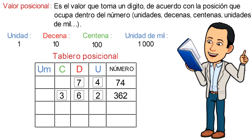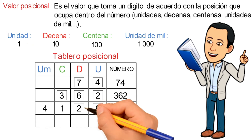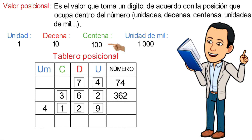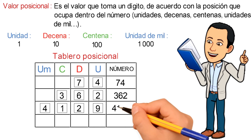Tercer ejemplo: tenemos el dígito 9, el dígito 2, el dígito 1 y el dígito 4. El valor 9 se encuentra en la columna de las unidades y como ésta vale 1 conservaremos este valor. El dígito 2 se encuentra en la columna de las decenas y como ésta vale 10 este valor se transformaría en 20. El dígito 1 se encuentra en la columna de las centenas y como ésta vale 100 este valor se transformaría en 100. Y el dígito 4 se encuentra en la columna de las unidades de mil y como ésta vale 1000 se transformaría en 4000. Luego sumando 4000 más 100 más 20 más 9 nos quedaría el número 4129.